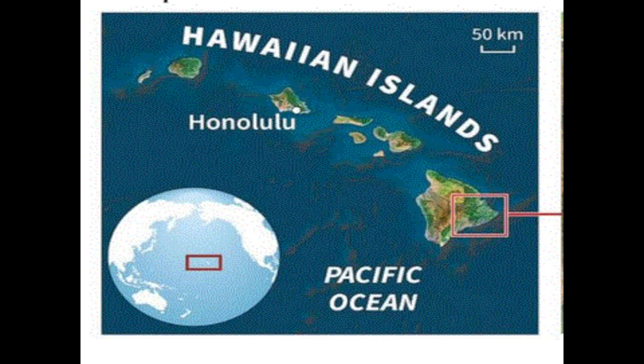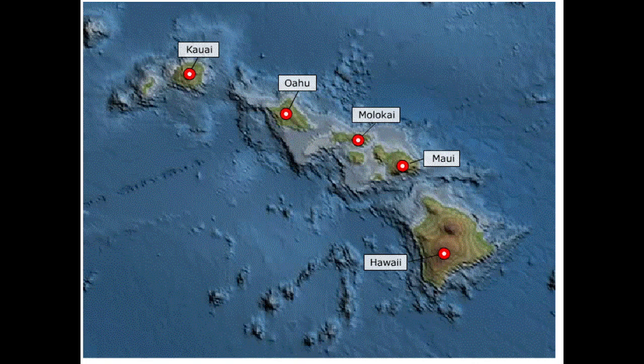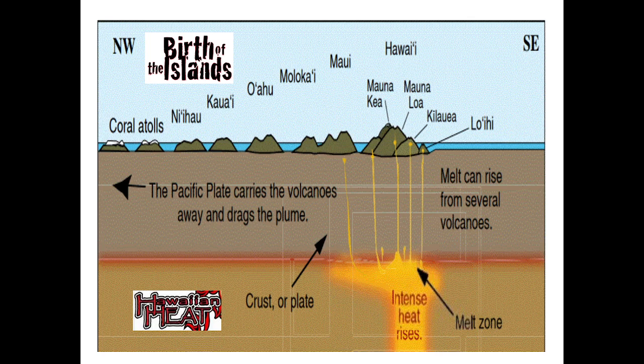Where in the world is Hawaii? Geology of Hawaiian Islands, by M. Nisargazar, PhD MPH. Hawaiian Islands — Honolulu, Pacific Ocean. Here is the map of all the islands. The Pacific Plate carries volcanoes away and drags the plume. Melt can rise from several volcanoes.